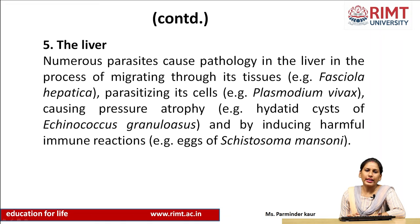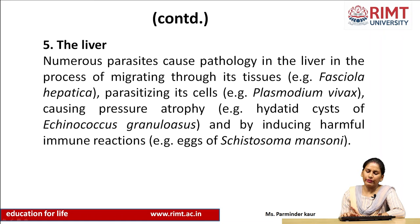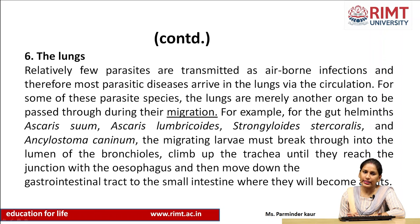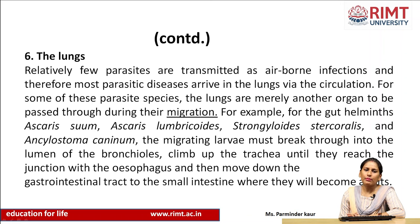The liver — numerous parasites can cause pathology in the liver during migration through the tissues. Fasciola hepatica, Plasmodium vivax, and Echinococcus granulosus cause inflammation and diseases in the liver. The lungs — relatively few parasites are transmitted as airborne infections; most parasitic diseases arrive in the lungs via the circulation. For some parasite species, the lungs are merely another organ to pass through during migration. Ascaris lumbricoides and Ancylostoma duodenale can be transmitted to the lungs and cause infection there.